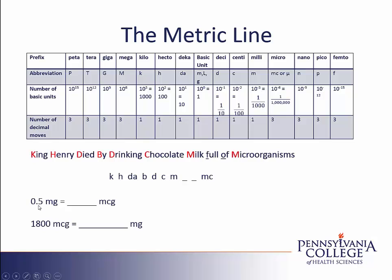Let's take a look at the first problem. We're asked to change milligrams into micrograms. When I look at my metric line, milligrams is represented with the prefix milli, and micrograms is represented with the prefix MC for micro. I'm starting at milligrams, because that's the piece I've been given. I need to jump one, two, three spaces on my metric line. Notice that I start on the actual letter and jump to the blank spaces and then to the actual letters.